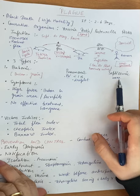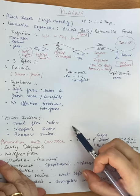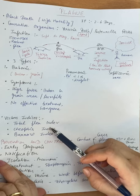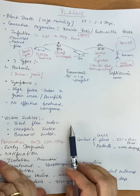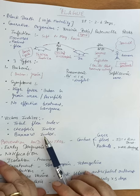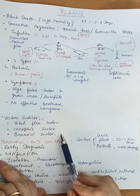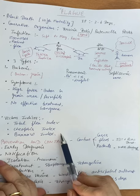A commonly asked exam topic is vector indices. The total flea index is the total number of flea species found per rat. The Xenopsylla cheopsis index is the number of Xenopsylla cheopsis species specifically found per rat. The burrow index is the number of rat fleas found per rat burrow — how many rat fleas are found in one burrow.